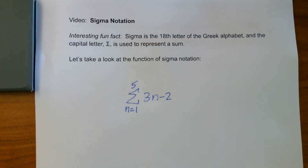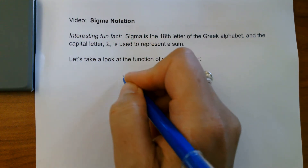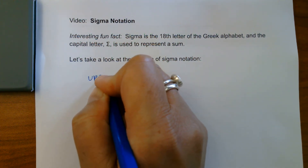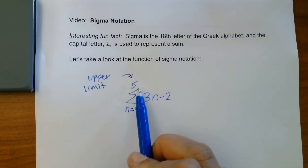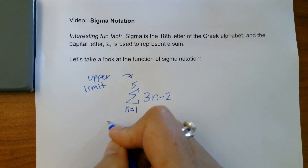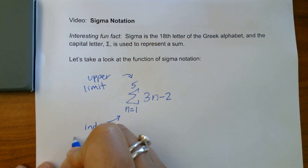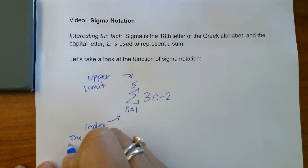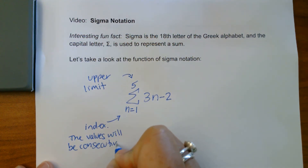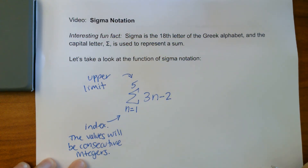So let's take a look at the function of sigma notation. So we have sigma notation here, and I'm going to go through each part. So here we have our capital letter sigma. The number above it is called our upper limit, and this is going to be where we stop when we actually go through and do the math. The n is called our index, and the values of n will be consecutive integers.